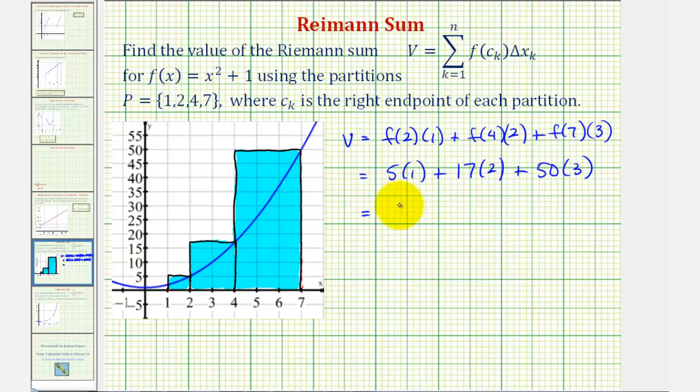So the value of this Riemann sum would be 5 plus 34 plus 150, or 189. I hope you found this helpful.